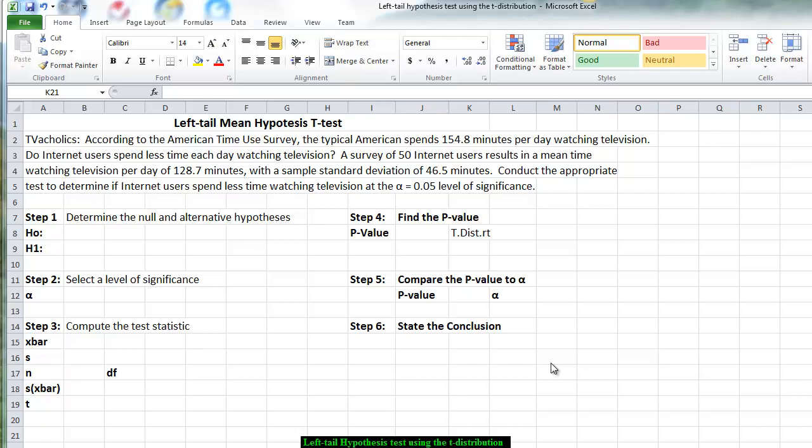We want to conduct the appropriate test to determine if internet users spend less time watching television at a 5% level of significance. Step one, we have to determine the null and the alternative hypothesis. Looking at the reason for the survey, we want to find out whether or not internet users spend less time each day watching television. That seems to indicate that the alternative hypothesis should be a less than situation.